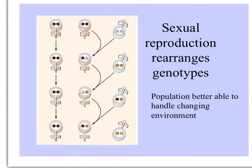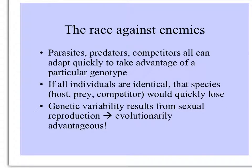It's good that the genotypes are rearranged because, as the environment changes, there's a continual supply of new variations, some of which may be better suited to survive and reproduce. For any organism, the changing environment includes resources as well as competitors, predators, and parasites, which are all evolving at the same time — so it's a kind of arms race.